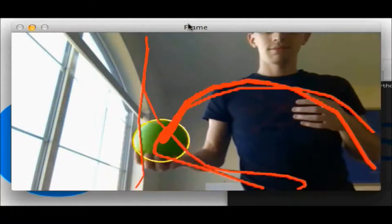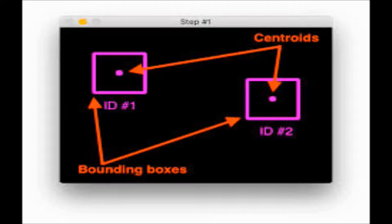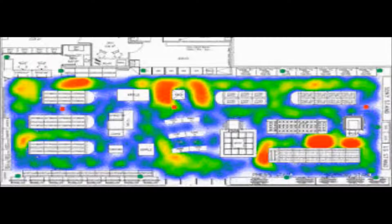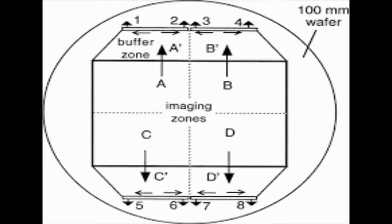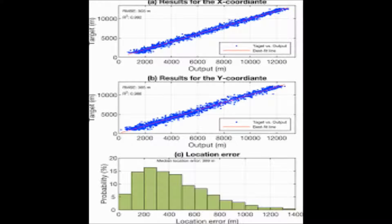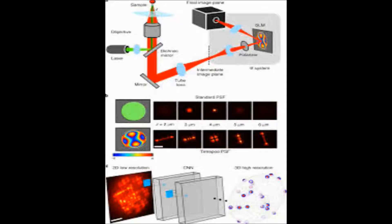The cameras work on the object detection principle. The cameras are located according to the division of the zones so that the exact position of the ball, and hence the zone, can be ascertained.